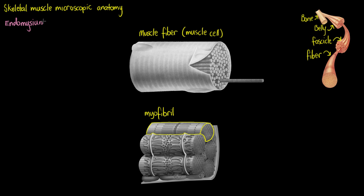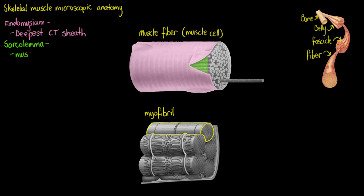The deepest connective tissue sheath covering those individual muscle cells is the endomysium. But underneath that we have something called the sarcolemma, which is just the name we give to the plasma membrane of skeletal muscle cells themselves. So the sarcolemma is the muscle fibre plasma membrane, and it sits underneath our endomysium.